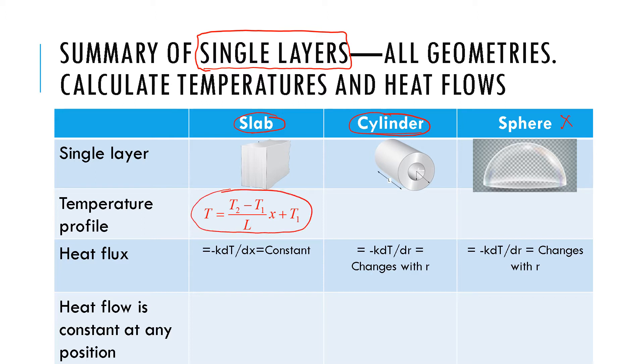To summarize the temperature profile, we got for a slab was linear, temperature varying linearly with position. Then for cylinder, temperature varies as natural log of the radius. And if we do the one for the sphere, this is what it looks like, and I expect you to be able to derive this following the procedure that we use for cylinder.